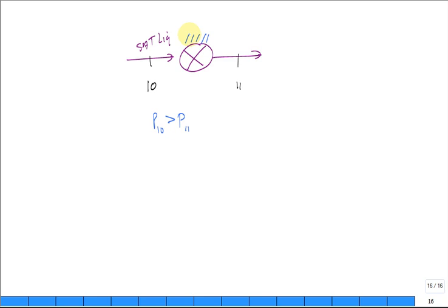This is adiabatic. Is there any shaft work in or out? So Q is equal to W is equal to nothing. There's no power, no heat transfer.